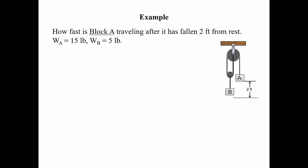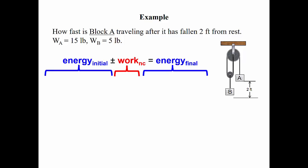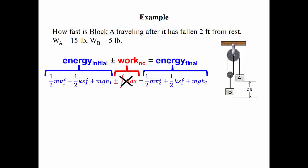Here's another example. Let's figure out how fast block A is traveling after it's fallen 2 feet from rest. The weight of A is 15 pounds and the weight of B is 5 pounds. Notice that we have two masses, so we're going to have to have terms for each mass. Starting with our energy equation: initial energy plus or minus non-conservative work equals final energy. In this case, there are no external forces acting on the system — no friction, we're neglecting air resistance, and the force at the top of the pulley is not applied over a distance — so we can immediately eliminate the work term from the equation.